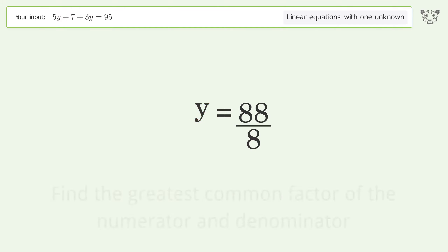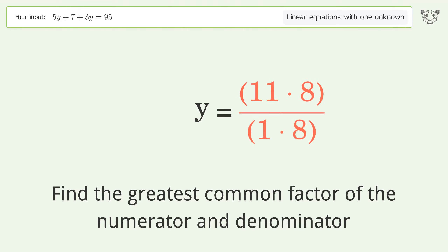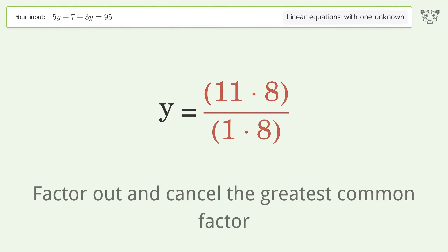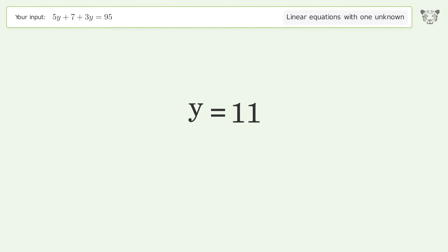Find the greatest common factor of the numerator and denominator. Factor out and cancel the greatest common factor. And so the final result is y equals 11.